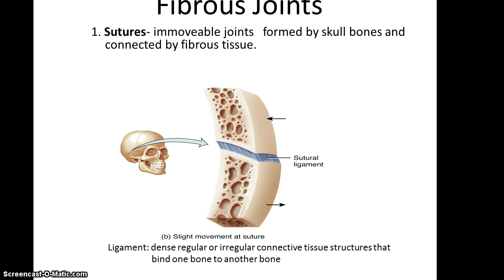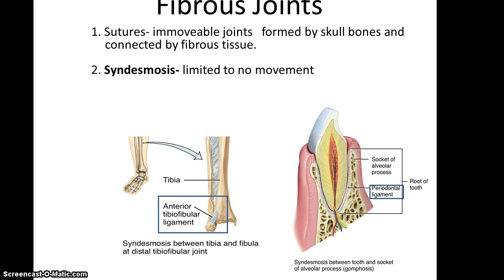Fibrous joints: one type is the sutures found in the skull. These are immovable joints formed by the skull bones and connected by dense irregular connective tissue, with little to no movement expected. The second type of fibrous joint is syndesmosis, found in places like the anterior tibial fibular ligament at the distal end of the tibia and fibula, where very little movement occurs. It's also found in the periodontal ligament which connects the tooth to the socket of the alveolar process, and even though the tooth is not technically a bone, this is still considered a joint.